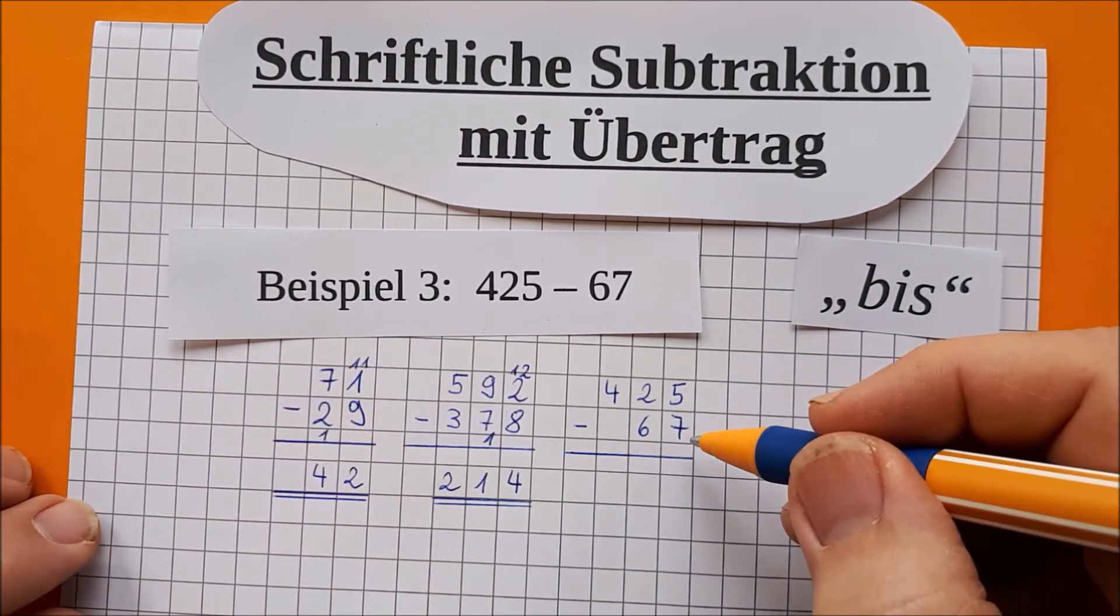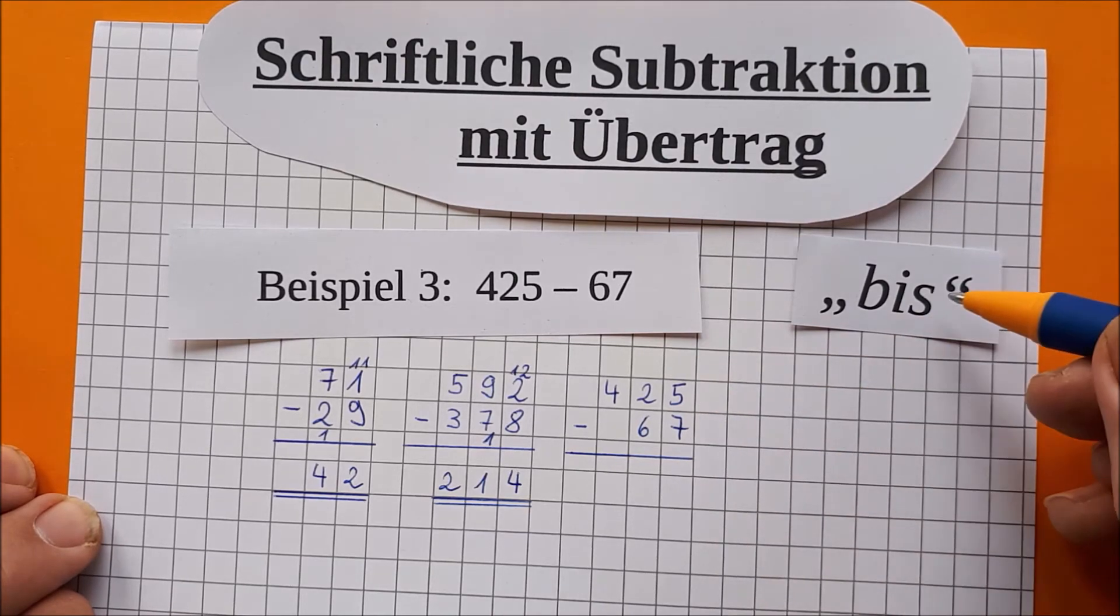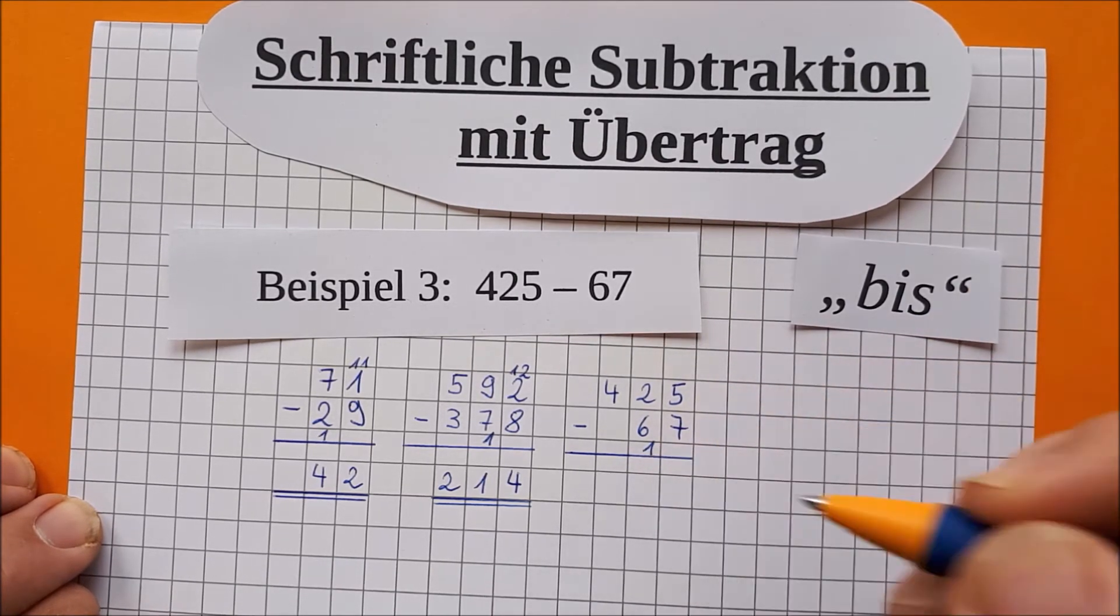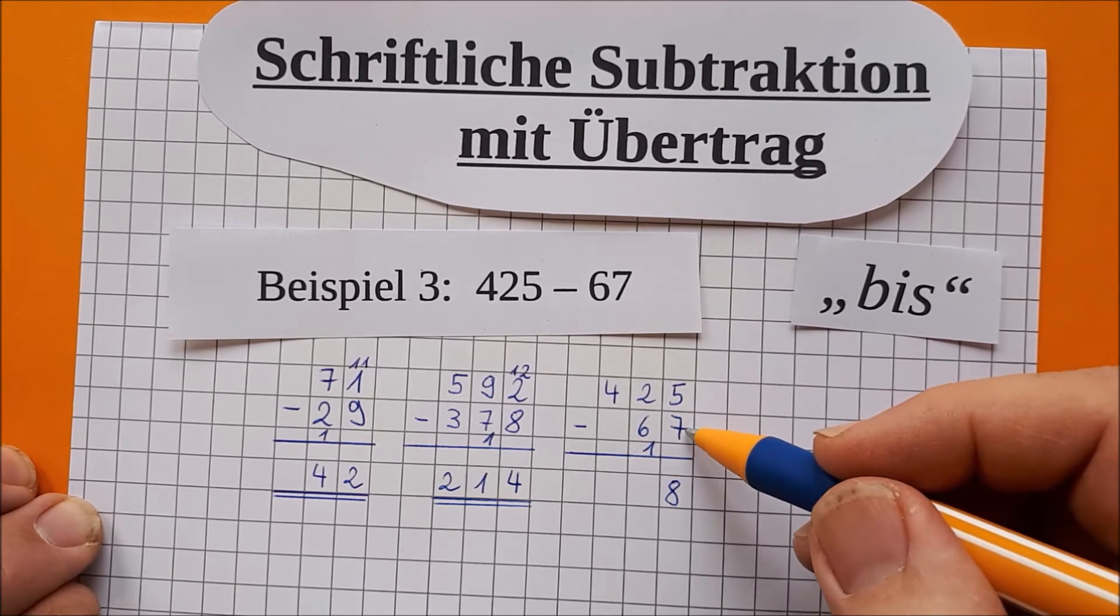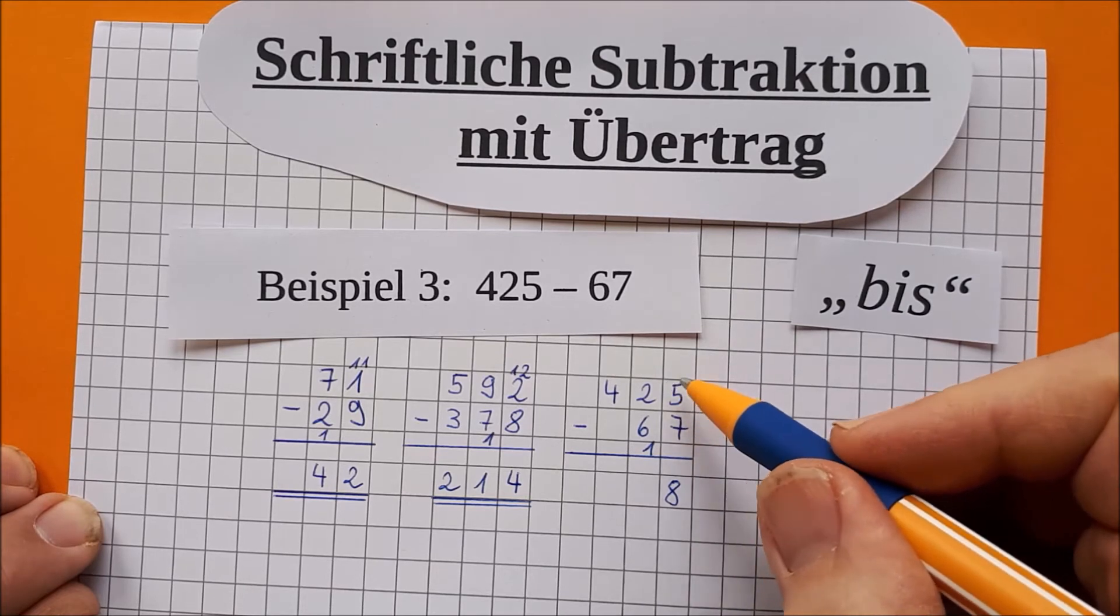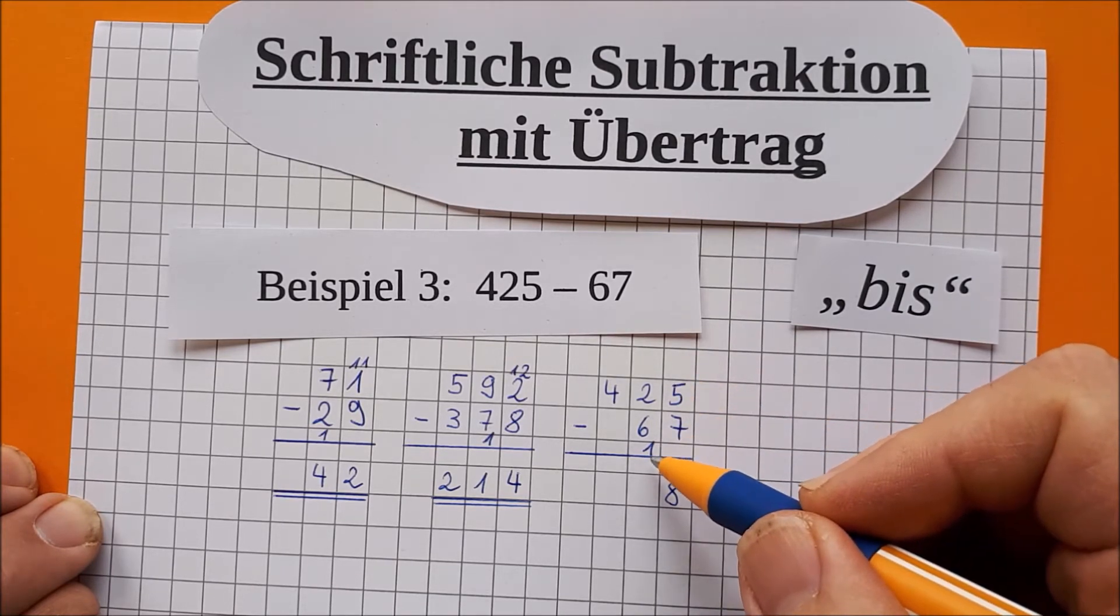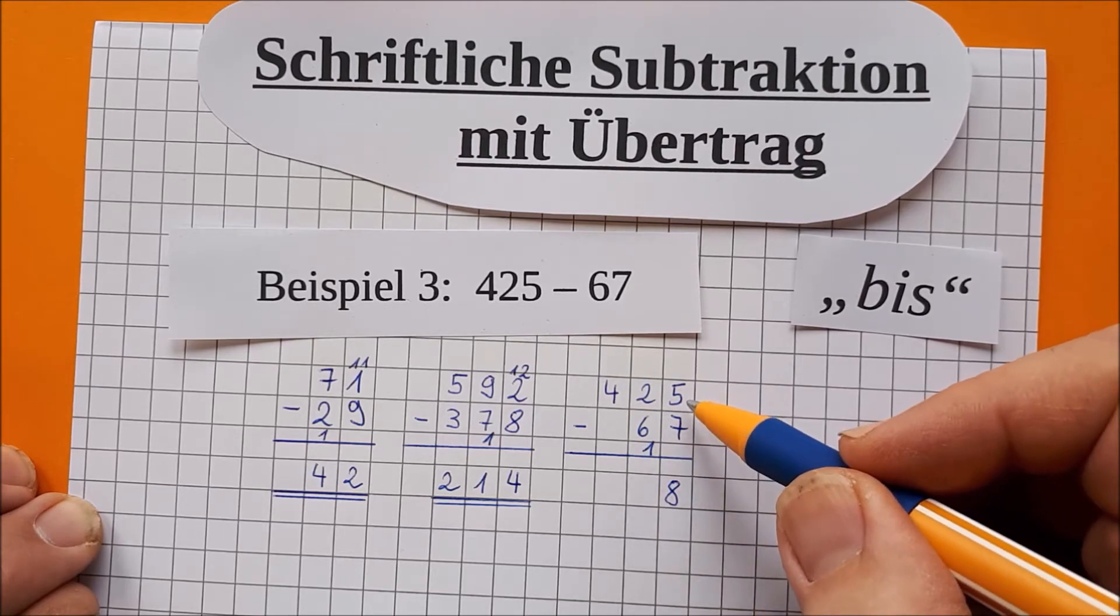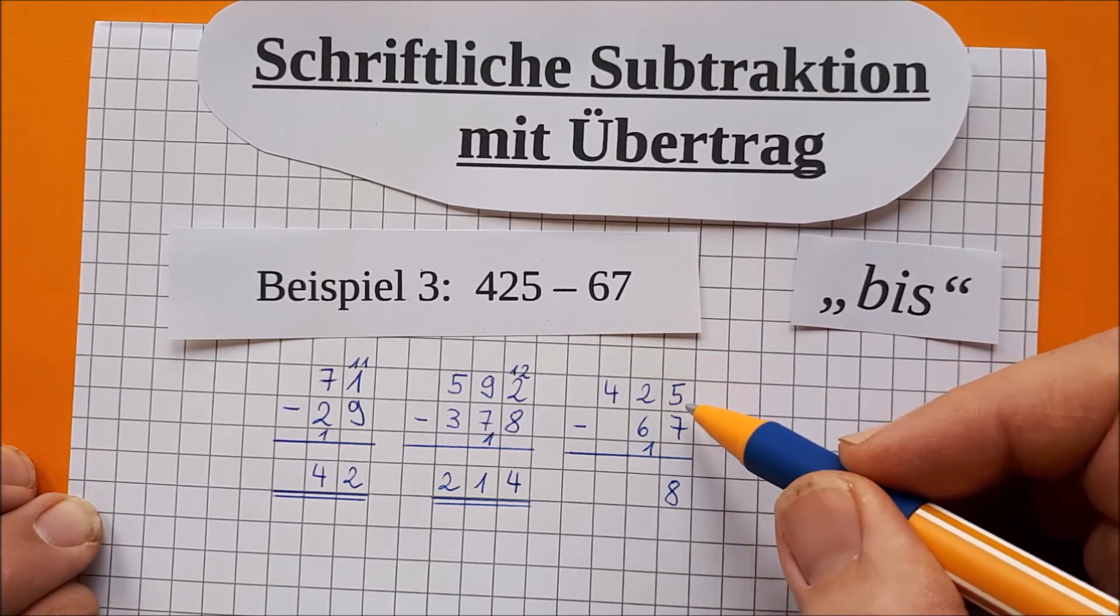Jetzt haben wir es wieder. Also 7 bis 5 geht nicht. Zauberwort ist immer noch bis. 7 bis 5 geht nicht. Also 7 bis 15 sind 8. 7 bis 15 sind 8. Jetzt habt ihr gemerkt, ich habe mir oben die 15 gespart. Schreibe aber den einen 10er hier natürlich trotzdem hin, damit ich ihn nicht vergesse. Aber das kann ich mir wirklich merken, da muss ich keine kleine 15 mehr drüber schreiben.